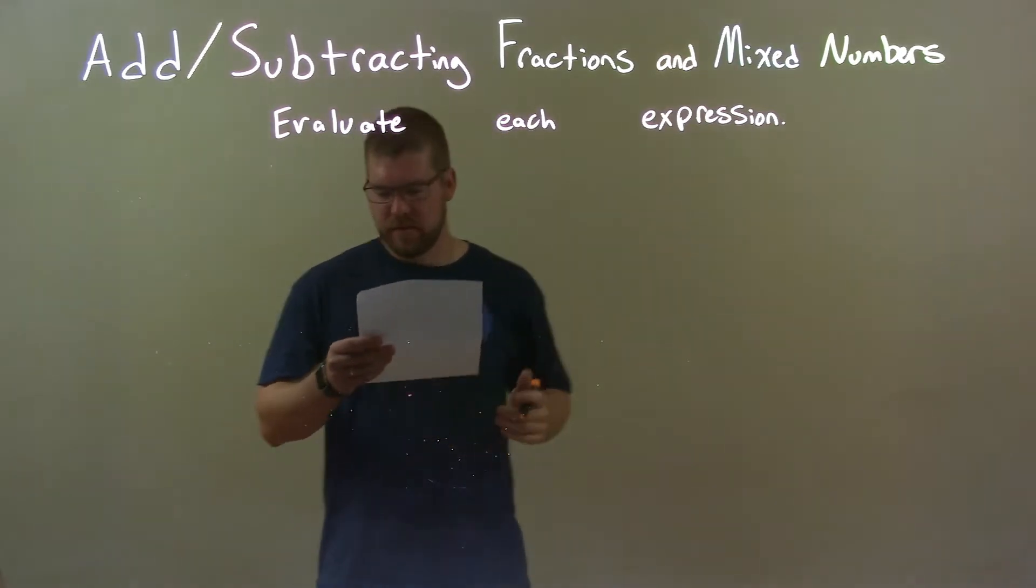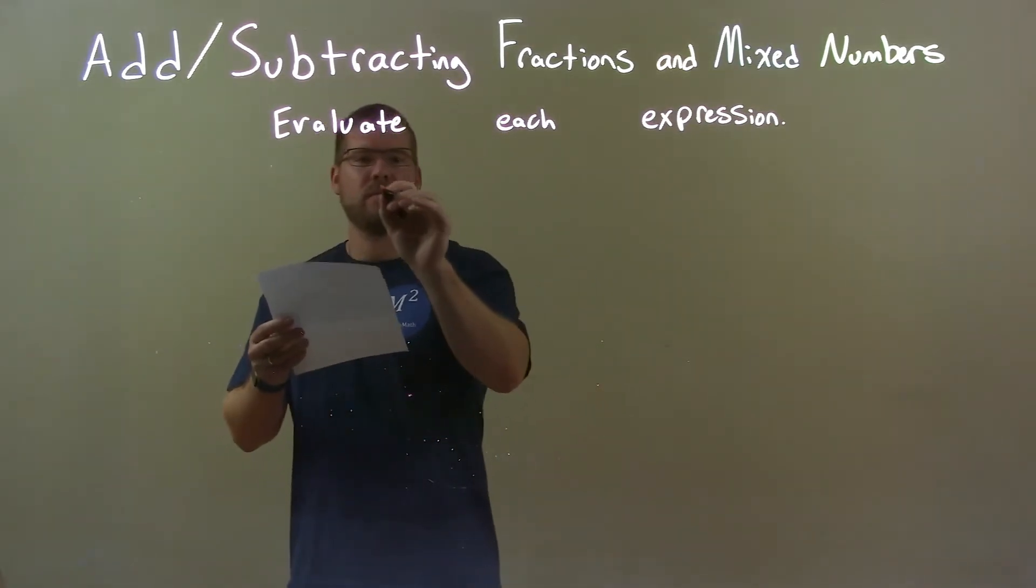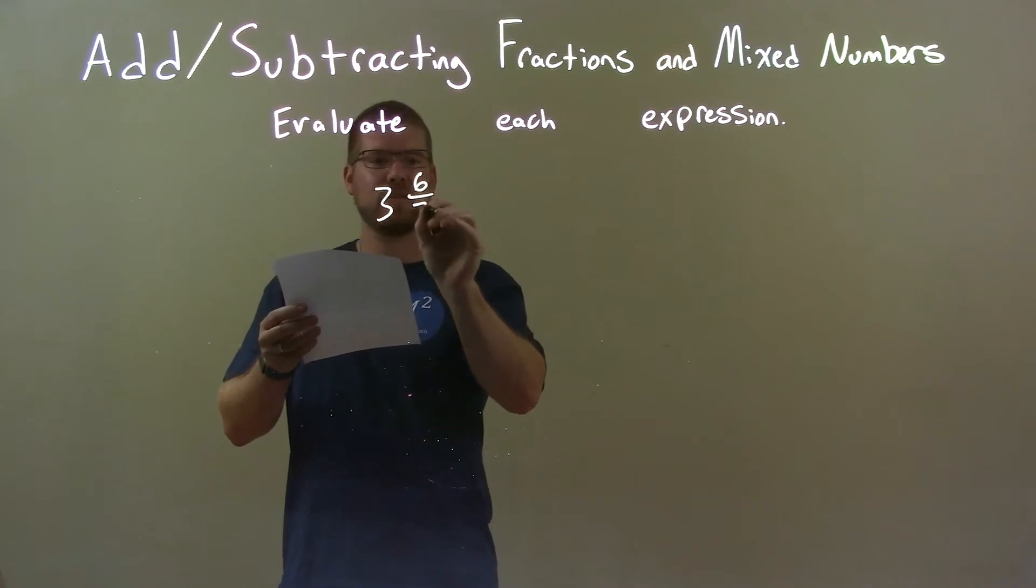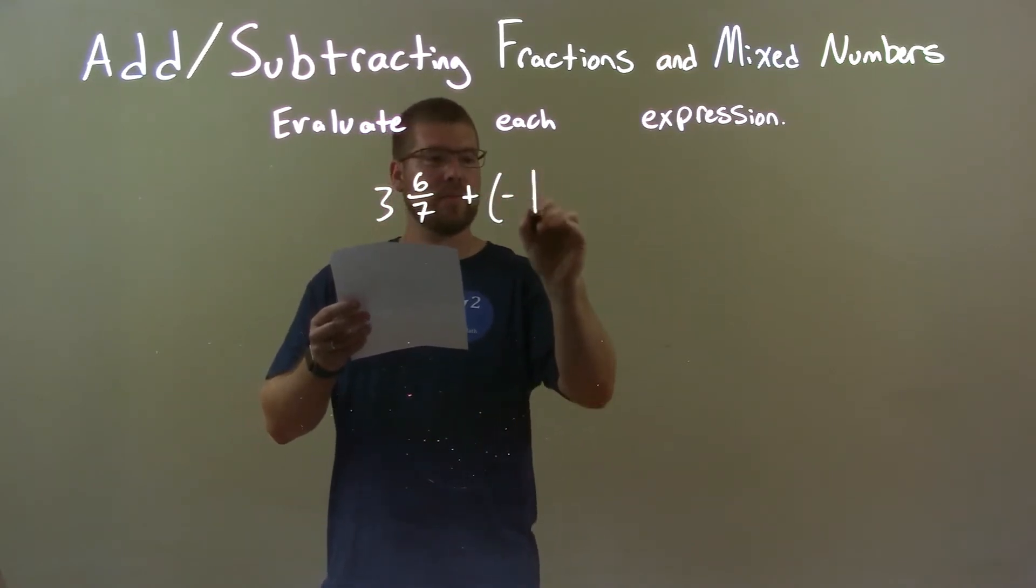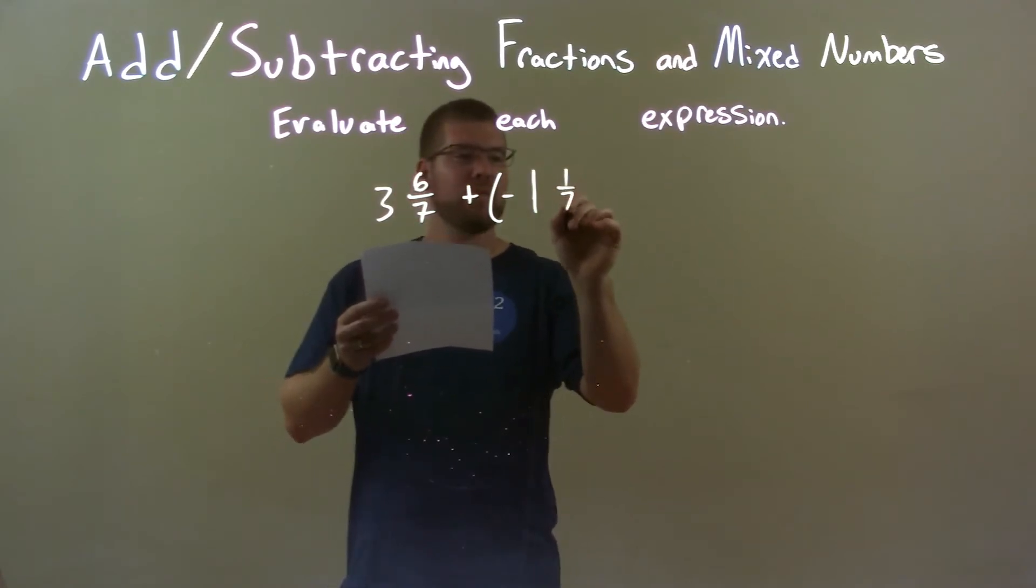If I was given these numbers: 3 and 6/7 plus negative 1 and 1/7, I'll make a big one there.